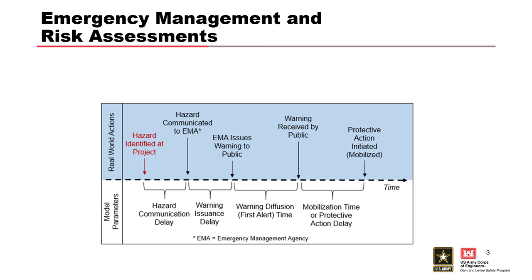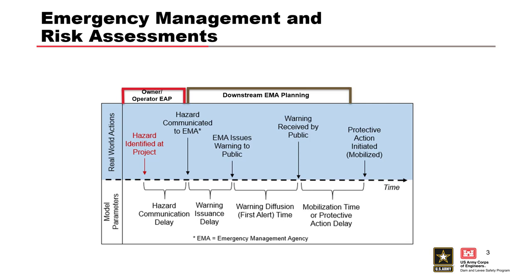Something we're working on right now is the effects of emergency action plans — owner-operator emergency action plans — on downstream consequences. This week we've talked a lot about working with EMAs, and that's this part of the timeline: warning issuance delay, warning diffusion, mobilization time — that's owned by the emergency management community. But how we monitor, respond to, and identify threats at our infrastructure, USACE infrastructure, and communicate that to emergency managers — that's something dam owners own in this timeline.